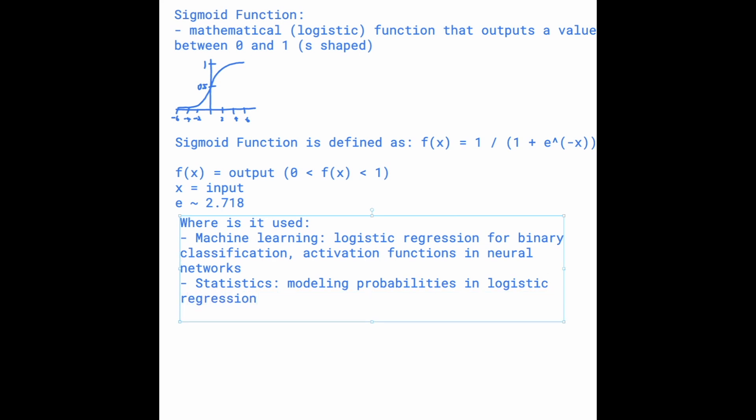I think another application is in biology, you might use it to describe population growth. So that's basically a brief overview of sigmoid functions. You'll probably see it a lot when we go over the actual implementation of, let's say, certain machine learning algorithms or neural networks. Thank you for watching.